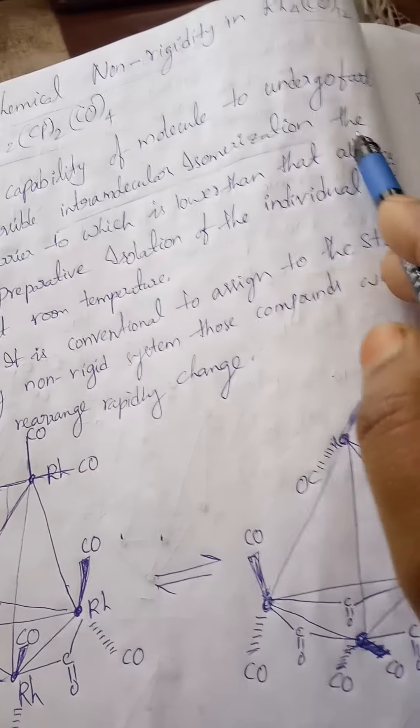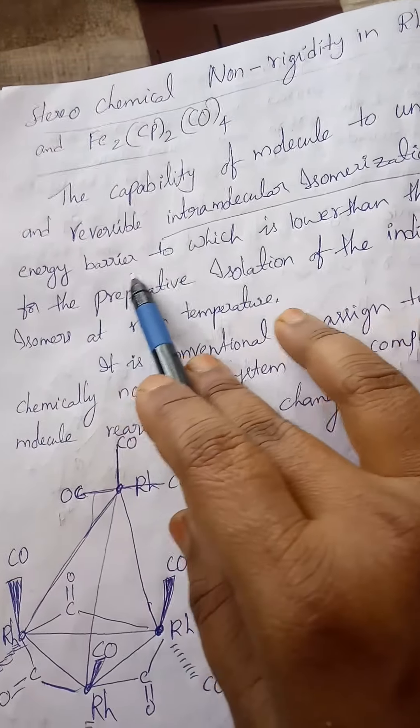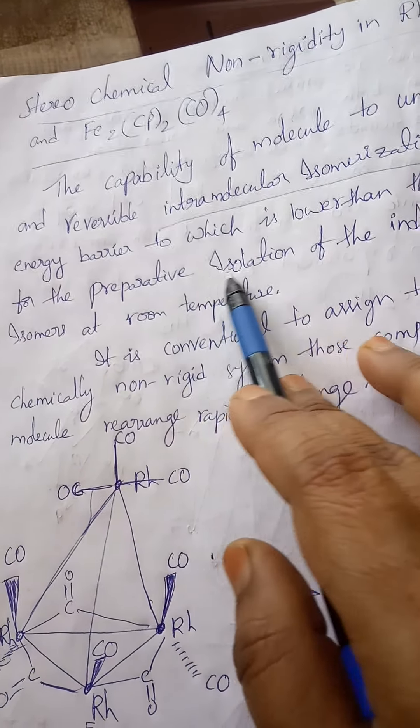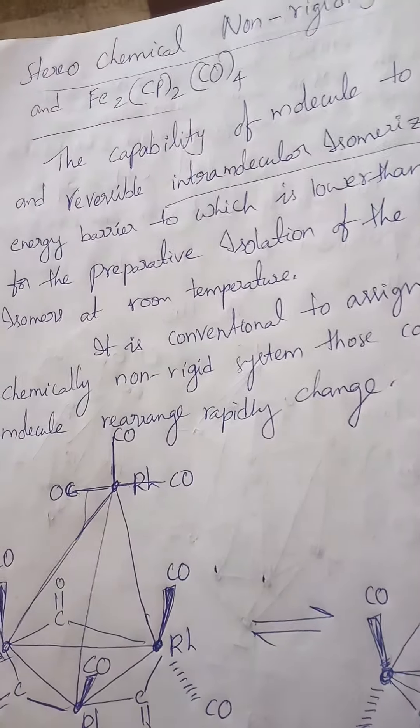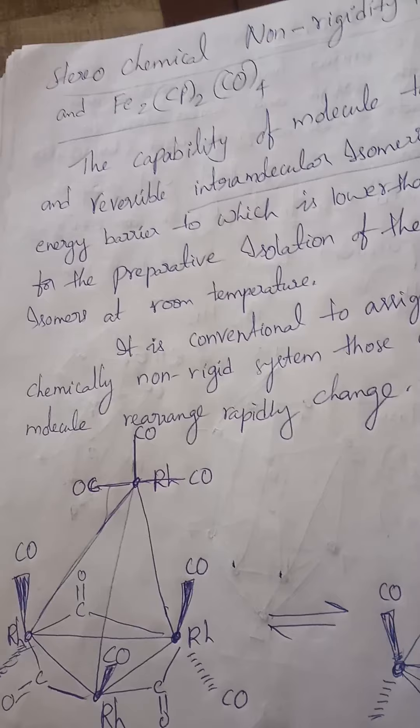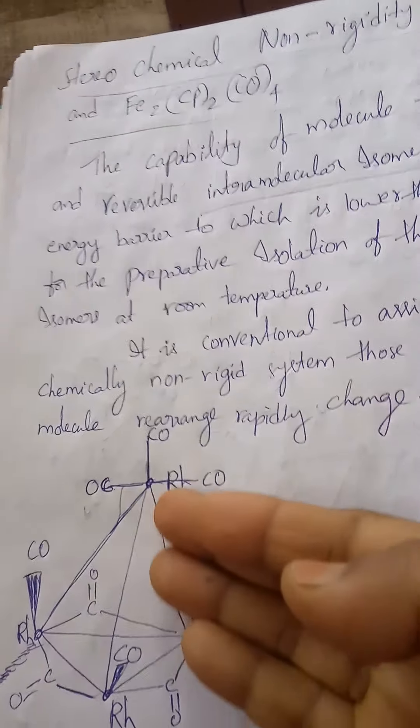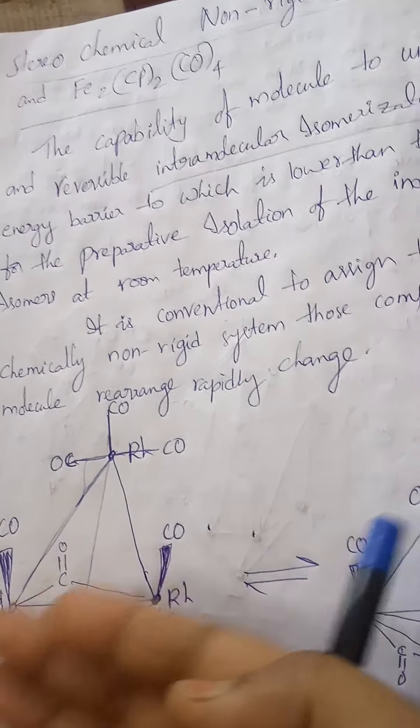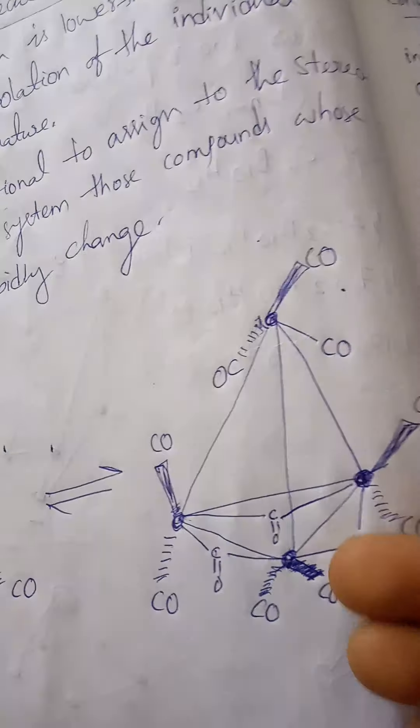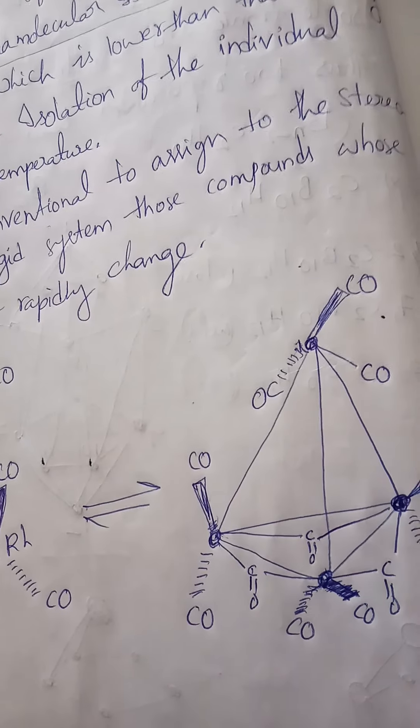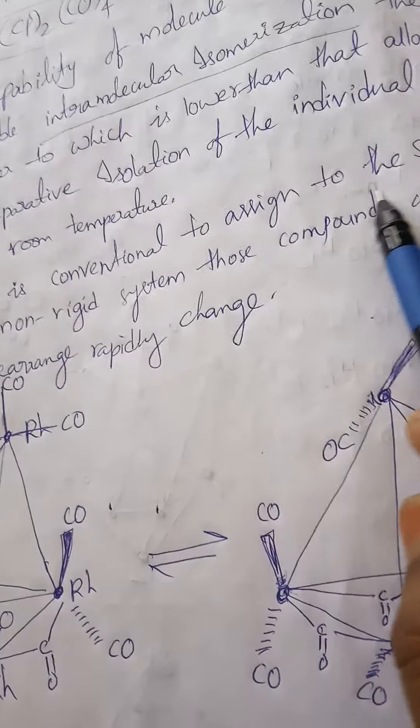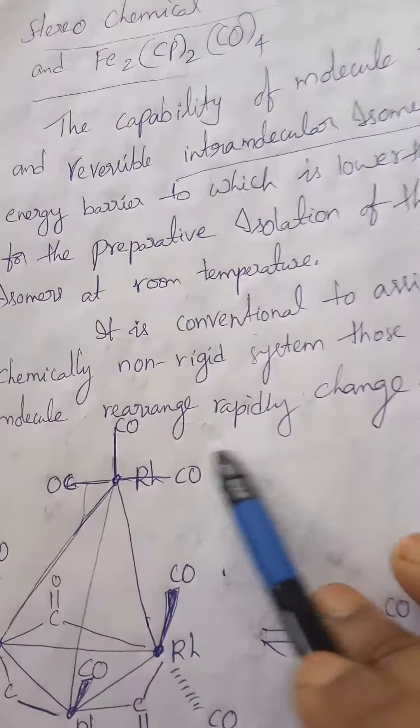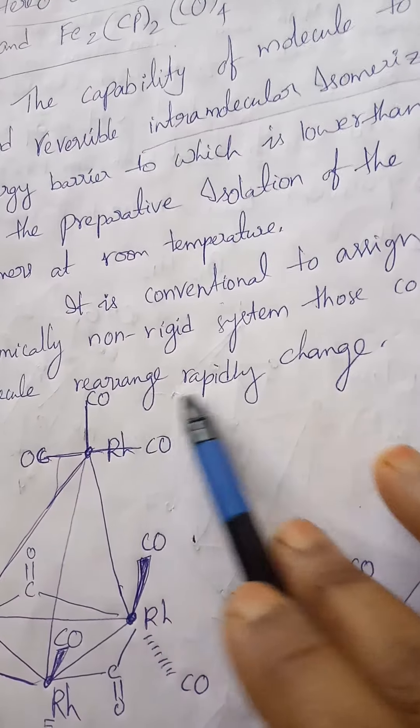The capability of a molecule to undergo reversible intermolecular isomerization, where the energy barrier is lower than that required for preparative isolation. The molecule interchanges, and the positions also change. Top positions become bottom, the plane of C double bonds or same plane. Sometimes we observe bottom of the plane. Rigid means it is a hard compound, but here non-rigid system, the rearrangement is rapidly changed.